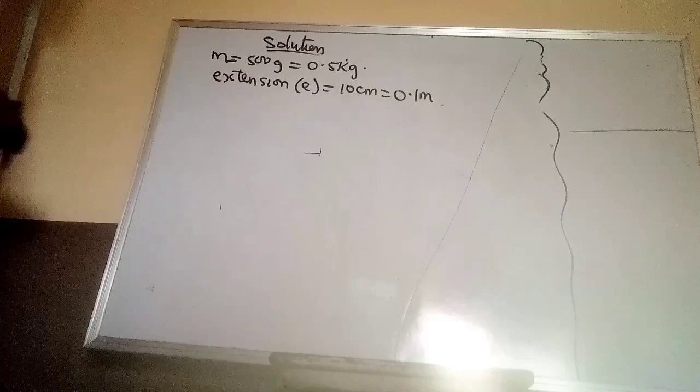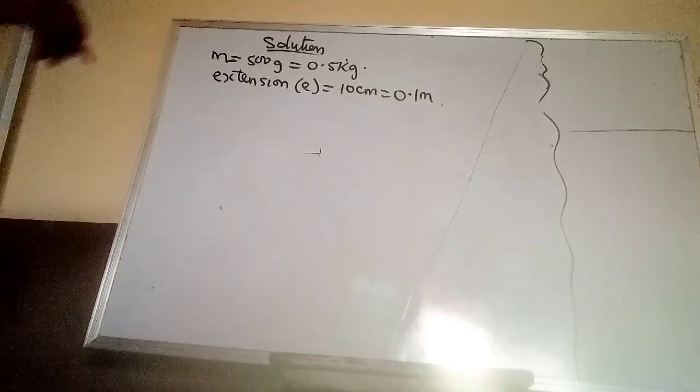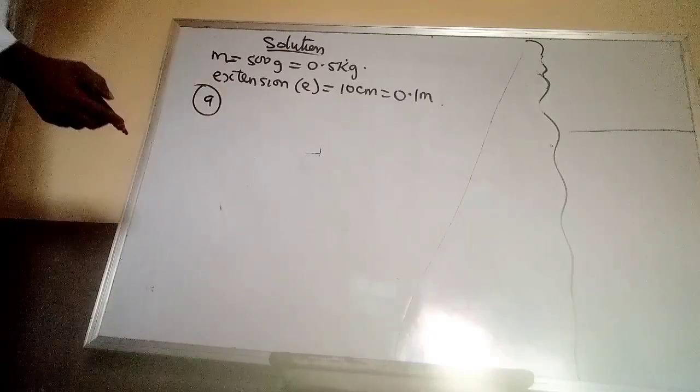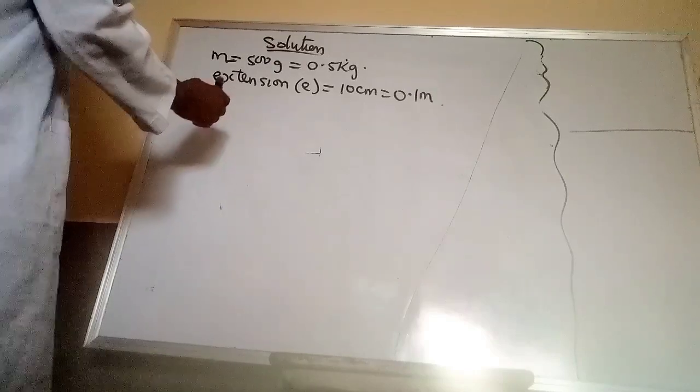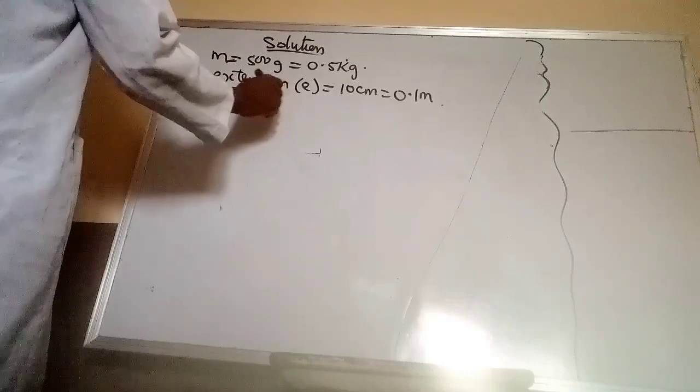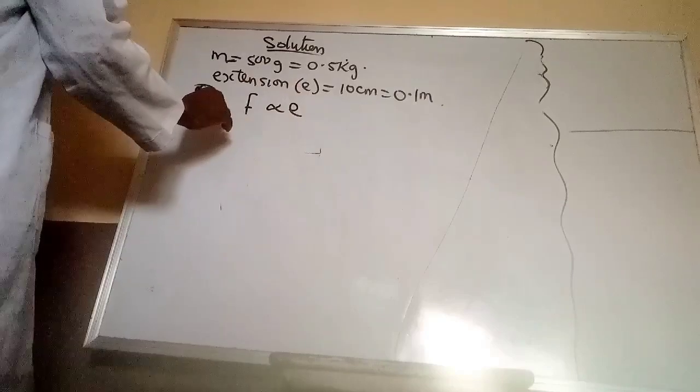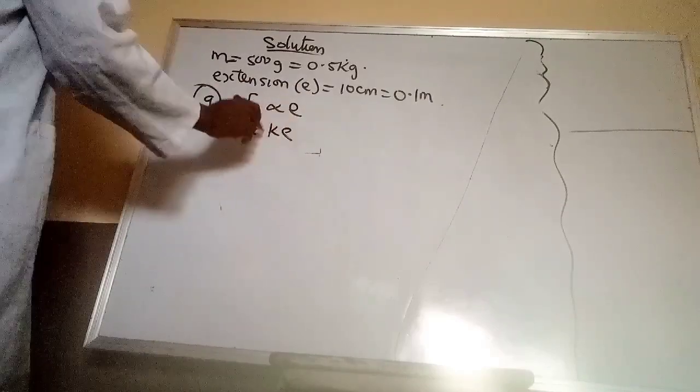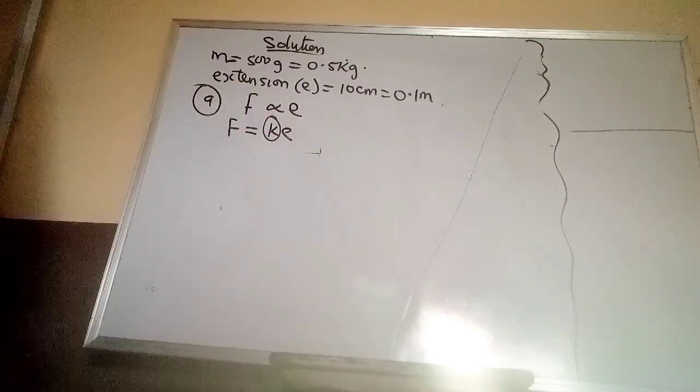The first question is asking us to find the force constant of the spring. If you want to find the force constant of the spring, you will have to employ Hooke's law that says that the force is proportional to extension. That means force equals to KE. This is the force constant we are looking at.